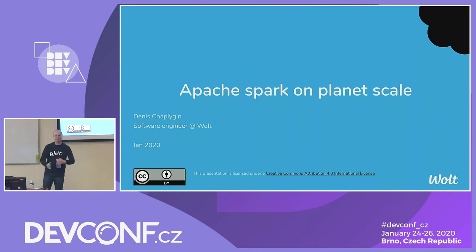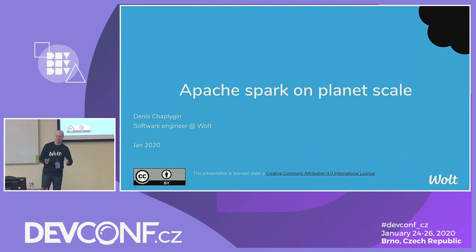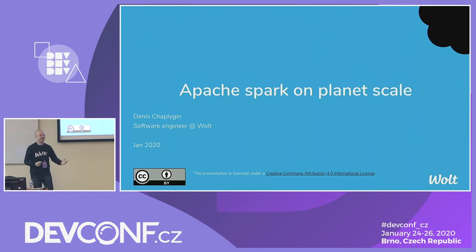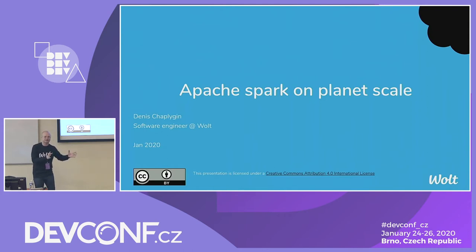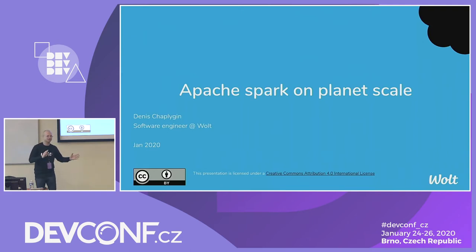Your lunch will magically arrive at your door. And what happens internally? Some unicorns start jumping over our servers and try to find the best way to deliver your food. They have to analyze a lot of data — like where are the courier partners, how do they move, what are their possible routes, where are the restaurants, where are the customers, what is the list of orders.